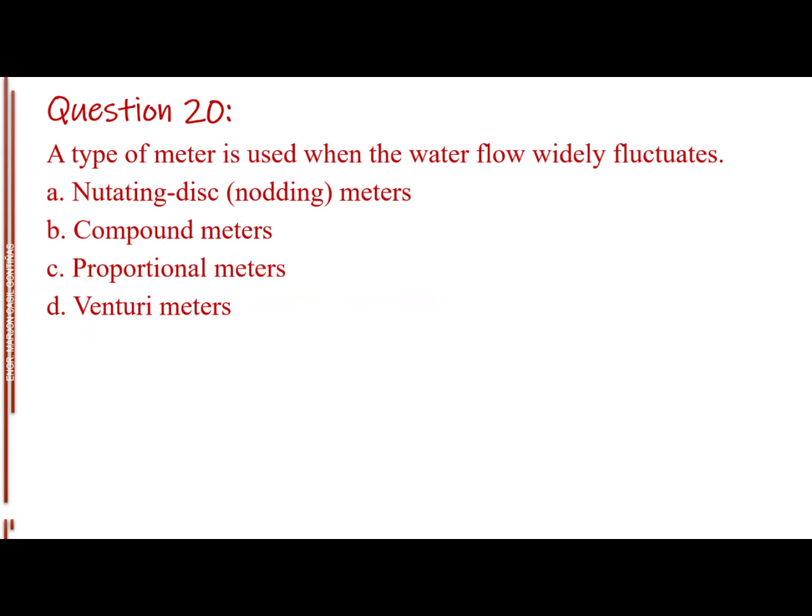Question number 20. A type of meter is used when the water flow widely fluctuates. Letter A, Nutating-disc (nodding) meters. Letter B, Compound meters. Letter C, Proportional meters. Letter D, Venturi meters. The answer is Letter B, Compound Meters.